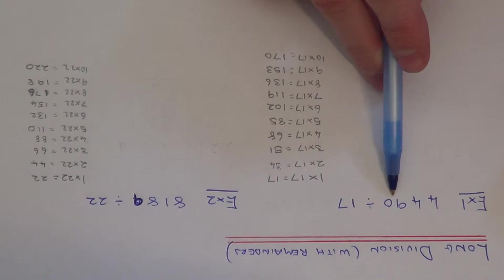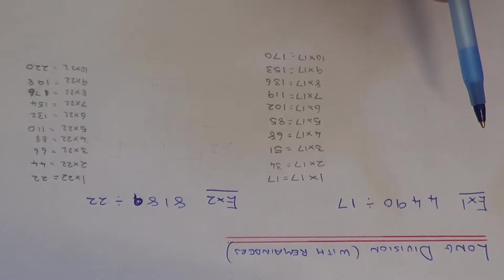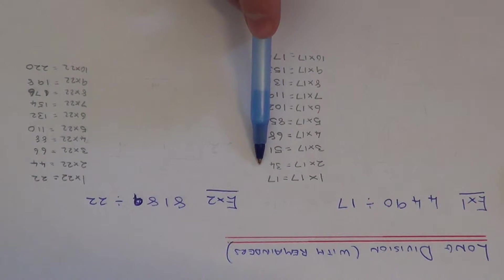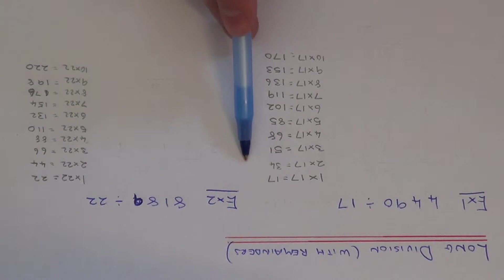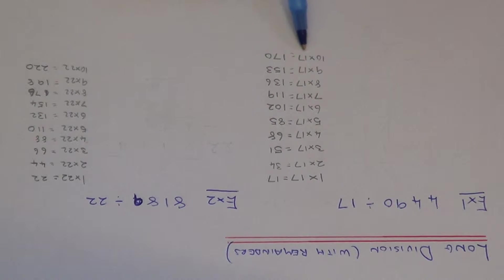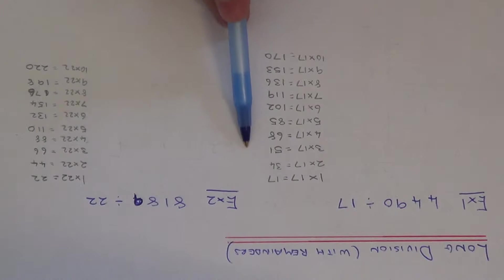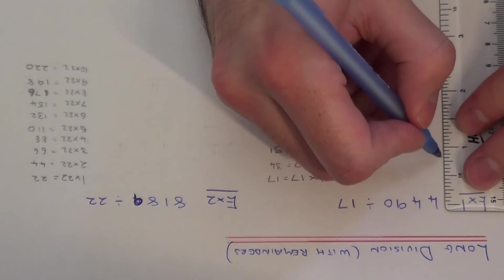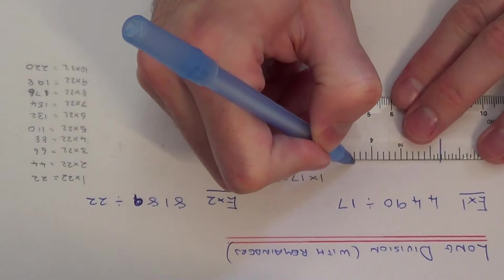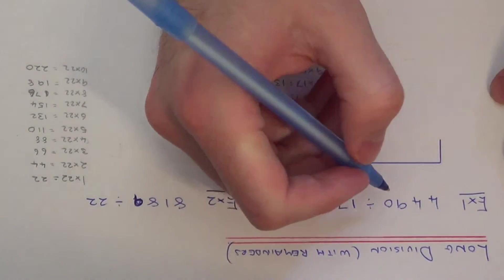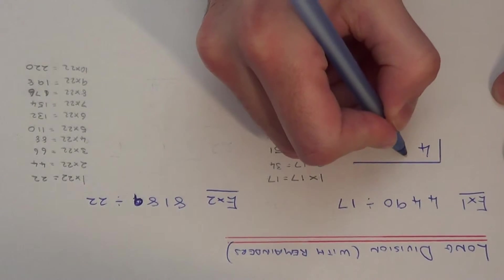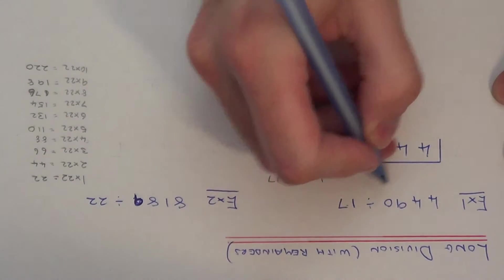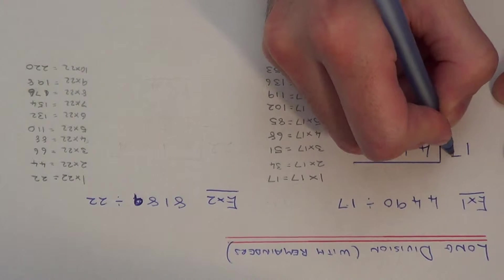So we need to work out 4490 divided by 17. Before the start of the video I've just spent a couple of minutes writing down my multiples of 17. This will make things a lot easier as you go through your division so you don't have to keep thinking about your multiples of 17. So first of all, set out your division like so — write the 4490 underneath the horizontal line and the number we're dividing by right at the start.